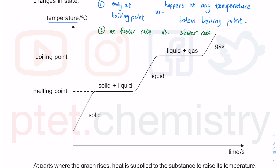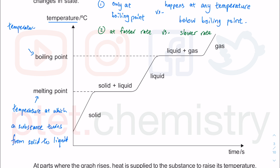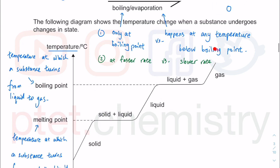Because this is temperature, let's define melting point. Melting point is the temperature at which a substance changes state from solid to liquid. And boiling point is the temperature at which a substance turns from liquid to gas. You need to know that these are temperatures, and they are defined as temperatures. Boiling point is not the same as evaporation point, because evaporation can happen at any temperature, although at a slower rate compared to boiling.